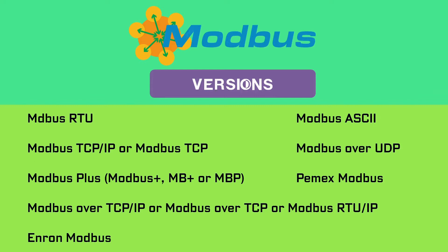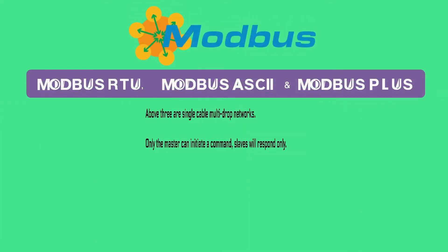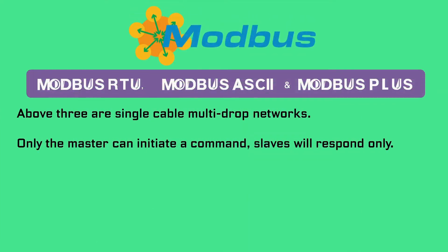The variants of Modbus are: Modbus RTU, Modbus ASCII, Modbus TCP/IP, Modbus over TCP/IP, Modbus over UDP, Modbus Plus, Pemex Modbus, and Enron Modbus. Modbus RTU, Modbus ASCII, and Modbus Plus are RS-485 single-cable multi-drop networks.